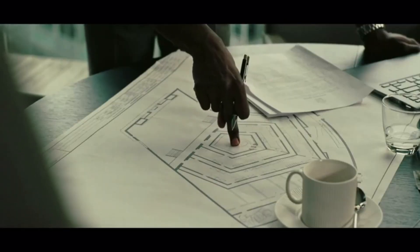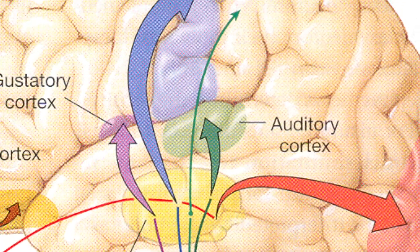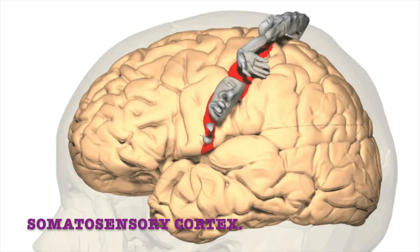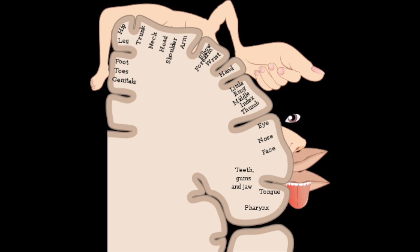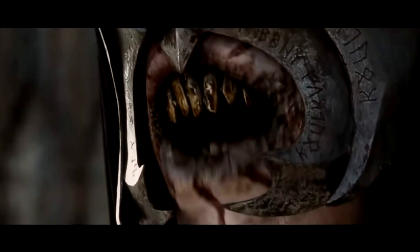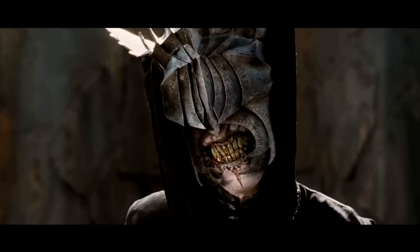After decussation, the fibers reach the thalamus - a relay station located in the very center of the brain, not far from the somatosensory cortex. The somatosensory cortex is the outer part of the brain in charge of processing incoming sensory stimuli from the outside world. When you look at a cross-section, you can map any zone in charge of a given body part. Every part of the somatosensory cortex is proportional to its importance - a small area for the trunk, but a larger one for the face, because it's more sensitive.